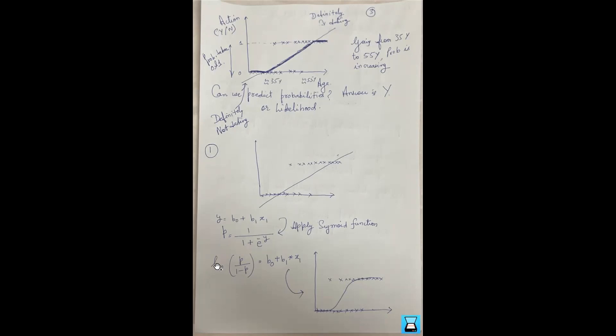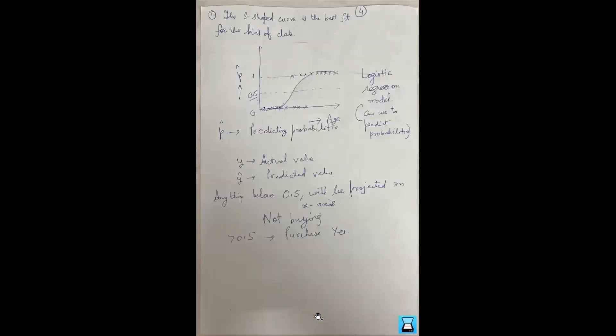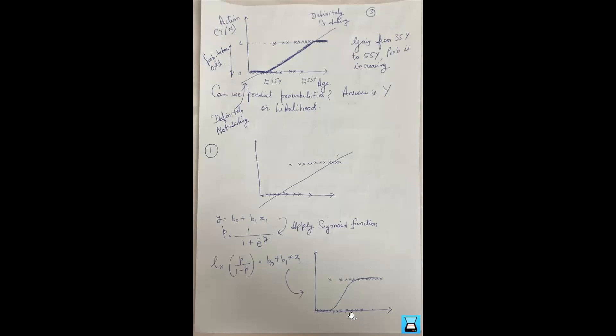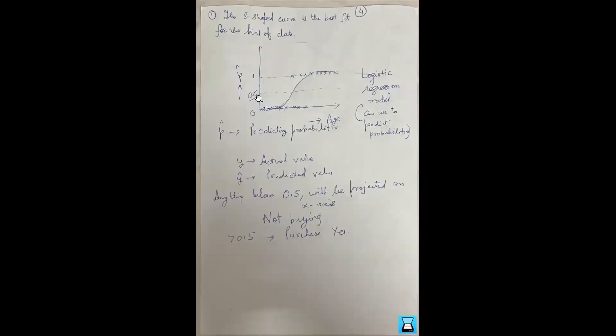Once we substitute y into the sigmoid formula, we get this equation. When we plot it, it takes an S-shaped curve, giving probabilities for a certain age of buying the product. We take a 0.5 threshold value: if probability is more than 0.5, the customer will purchase; if less than 0.5, he will not purchase. So logistic regression does classification of two classes — product not purchased and product purchased — based on probabilities.